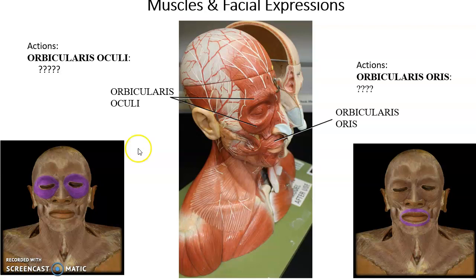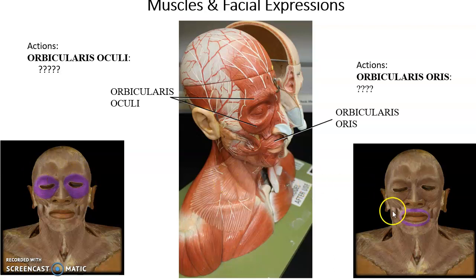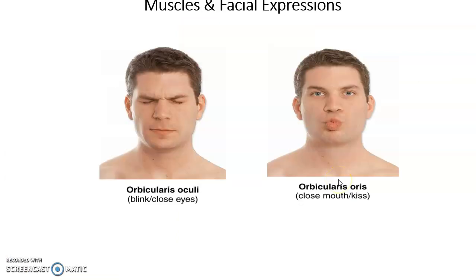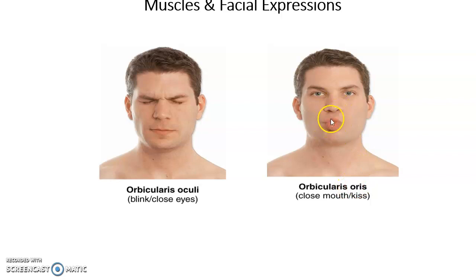The orbicularis oculi — two muscles, one around each eye — is a circular muscle around each eye. The orbicularis oris is the single circular muscle around the mouth. When the orbicularis oculi contract, they close the eyes and allow blinking. When the orbicularis oris contracts, it closes the mouth, and if contracted hard enough, it can produce a pursed lip expression.